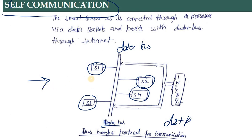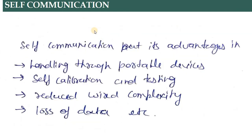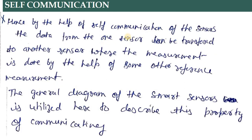एक normal smart sensor जो multiple internet sources के through connected है — the smart sensor is connected through a processor via data sockets and ports with data bus through the internet in case of self communication. By the help of self communication, the data from one sensor can be transferred to another sensor where the measurement is done by the help of some other reference measurement। जैसे मैंने पिछली lecture में बताया था कि वो data communicate कर देगा AC वाले sensor के पास भी, वहाँ switch off/on करना है, और further जहाँ जहाँ requirement है वहाँ communicate करेगा।